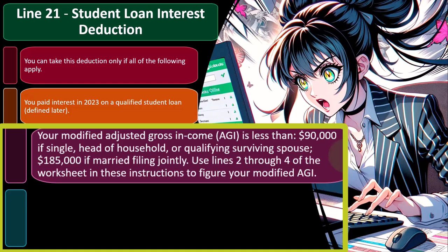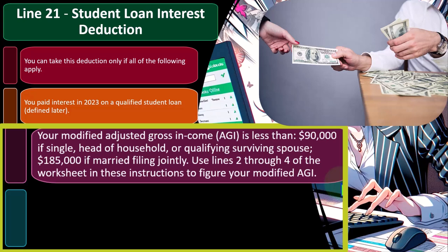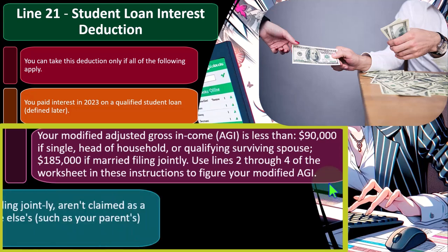So use lines two through four of the worksheet and these instructions to figure your modified adjusted gross income. Why does it say modified? Well, they typically start with the AGI and then they modify it from there. In part, you have to consider this one because the deduction is an adjustment for income, meaning it's going to be an above-the-line deduction, which will have an impact on adjusted gross income. So we'll have a circular reference when we try to figure out this phase-out thing if we don't make some kind of adjustment to the adjusted gross income.